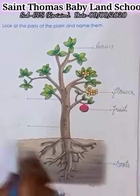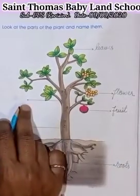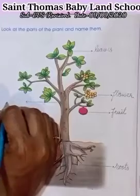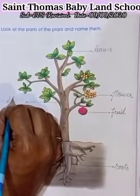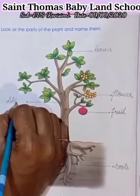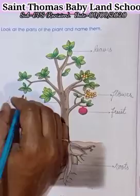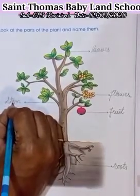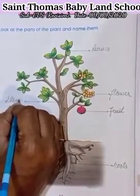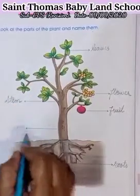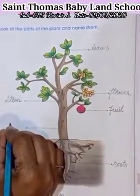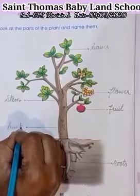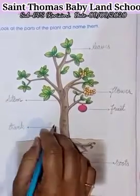Now what is this? This is stem. S-T-E-M, stem. And this is trunk. T-R-U-N-K, trunk.